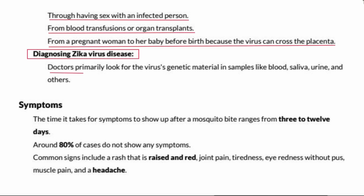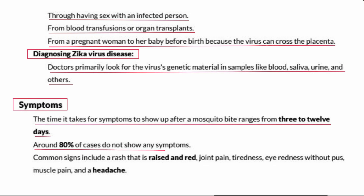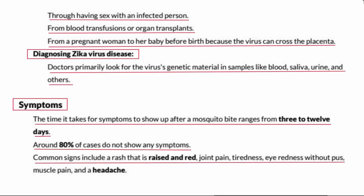Diagnosing Zika virus disease: Doctors primarily look for the virus's genetic material in samples like blood, saliva, urine, and others. Symptoms: The time it takes for symptoms to show up after a mosquito bite ranges from 3 to 12 days. Around 80% of cases do not show any symptoms. Common signs include a raised red rash, joint pain, tiredness, eye redness without pus, and muscle pain.